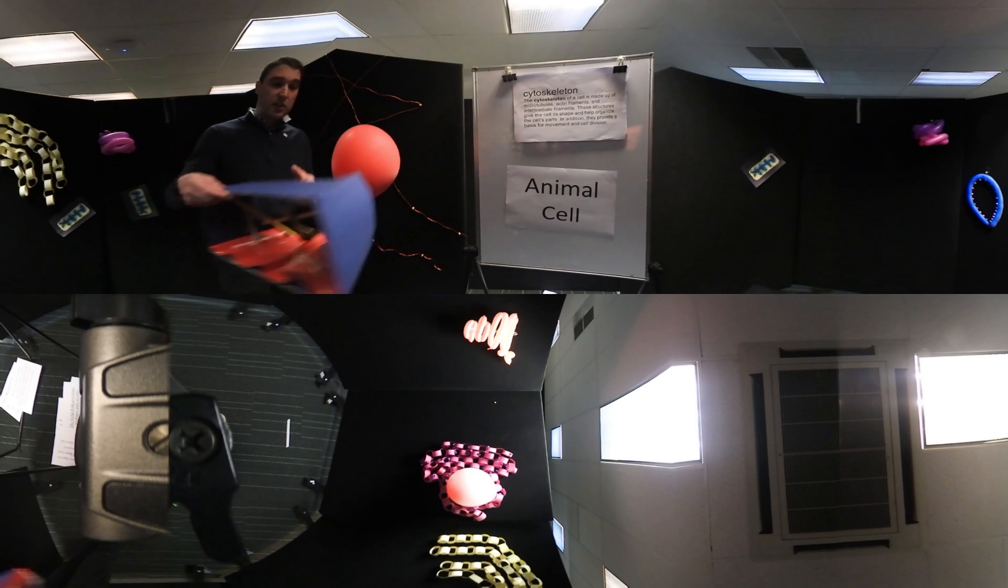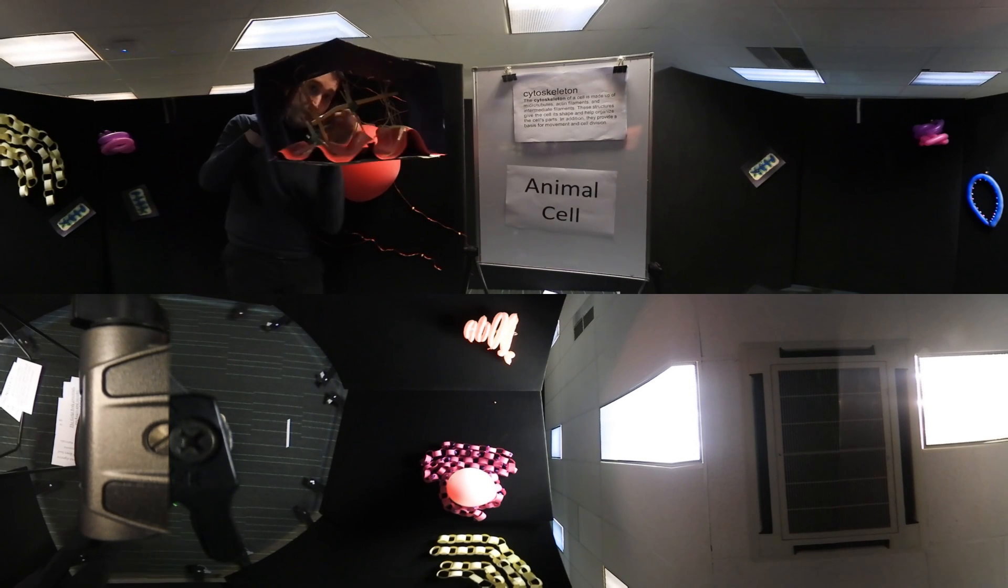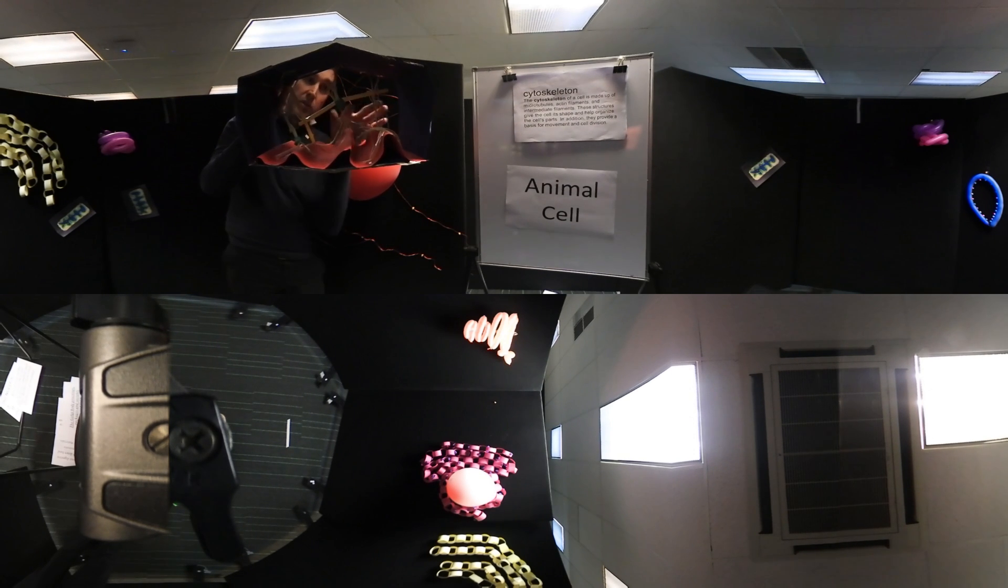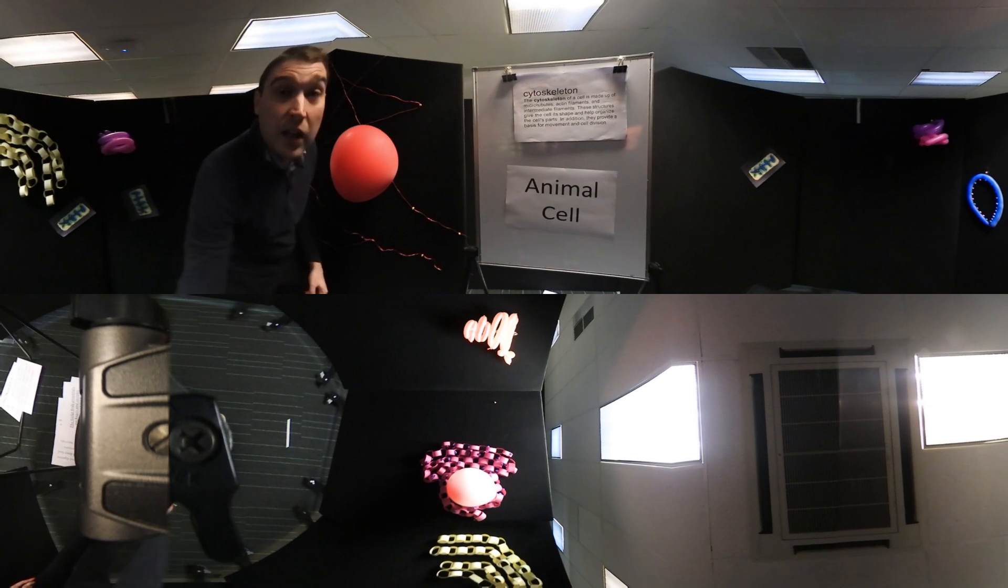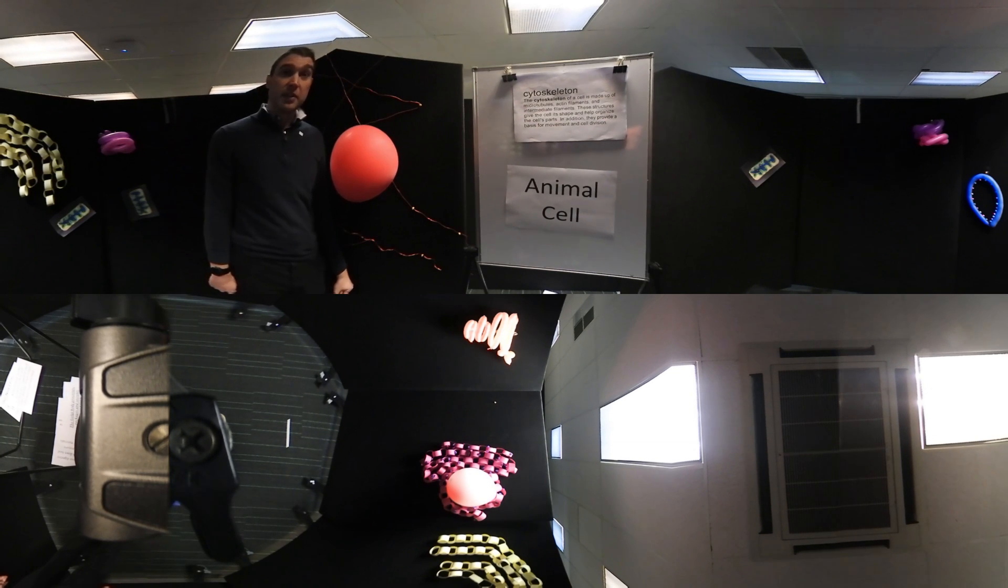I have a little model of the cytoskeleton here. The thick parts we can see, that's the microtubules. And then we have some string inside here of different types. We have microfilaments and intermediate filaments. So it's those three components that make up the cytoskeleton. Let's talk about our last part of the animal cell, the cell membrane.